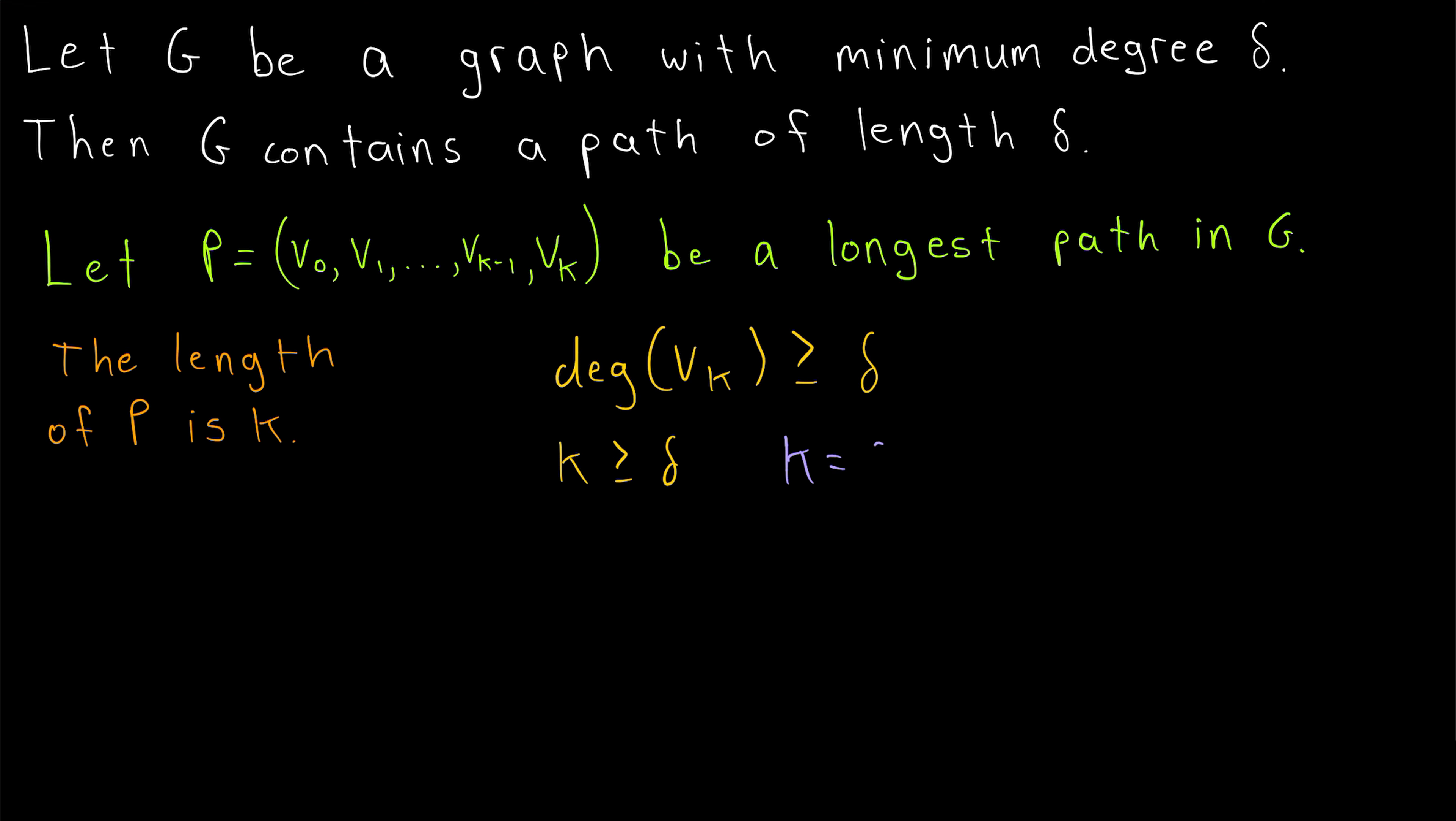If k happens to be equal to delta, then we're done. P is our path of length delta. Otherwise, if the length of P is greater than delta, we can just take a subpath of P with length delta. In particular, we could say let P delta be the path consisting of the first delta plus 1 vertices of our path P, and that is guaranteed to be a path of length delta in our graph G.